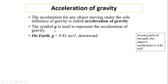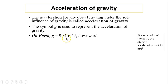This symbol is in your reference table. On Earth's surface, g equals 9.81 meters per second squared. g always is downward. Acceleration is a vector quantity — it has direction. 9.81 meters per second squared is the magnitude, and its direction is downward.